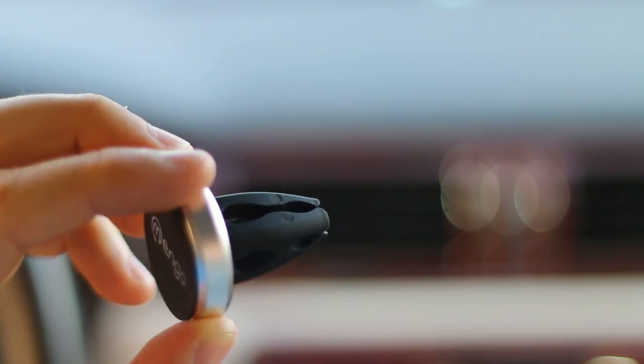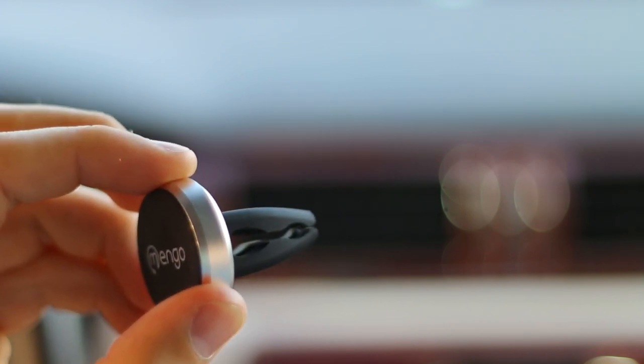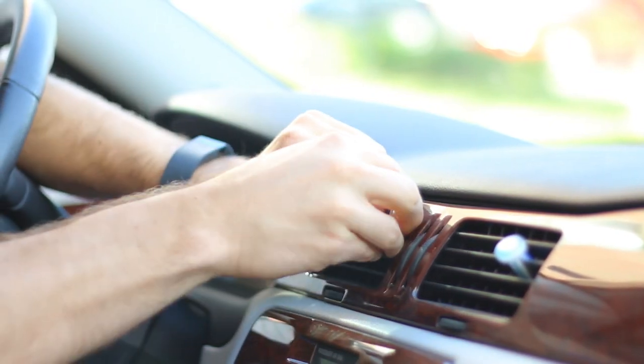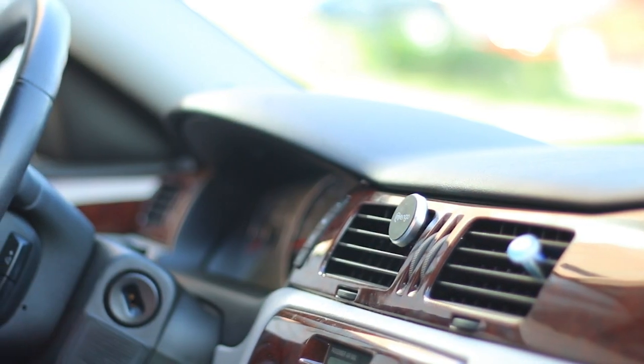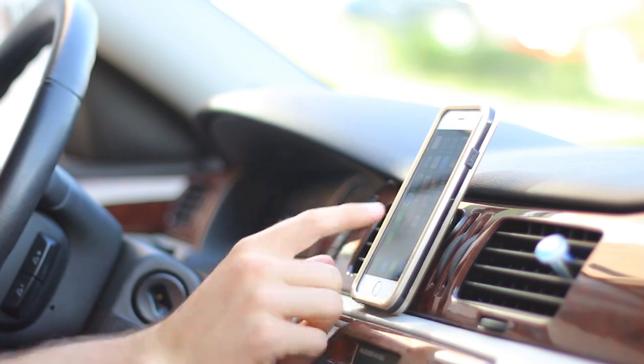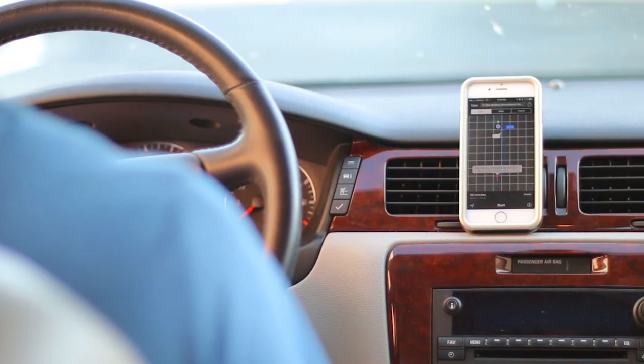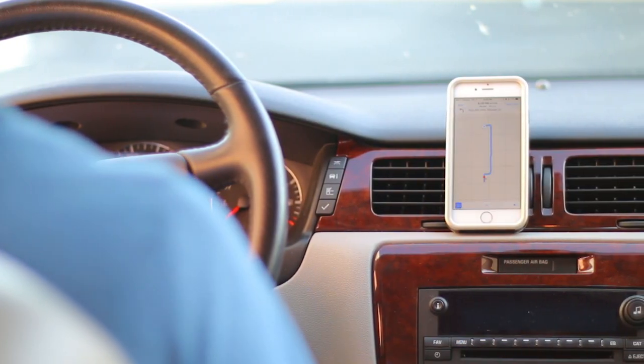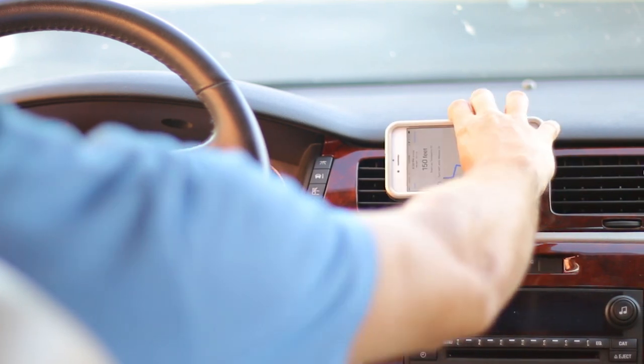To mount the Air Vent Magnet, choose between one of two sized slits on the mount and slide it all the way onto the air vent, then attach your device. With 360 degree mounting flexibility, mount your devices at any angle that suits the driver's needs.